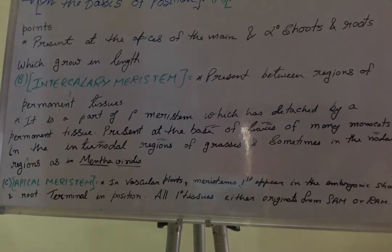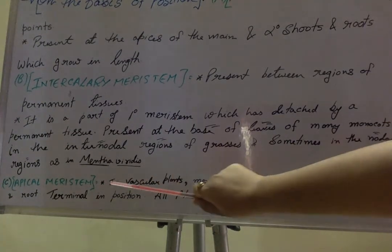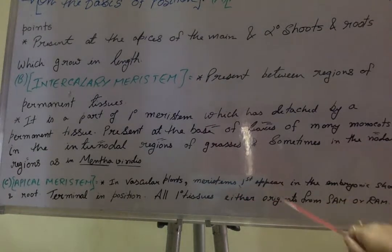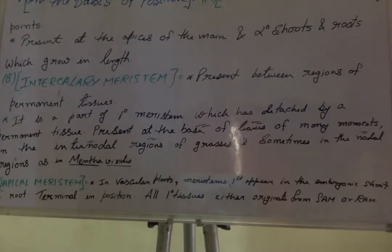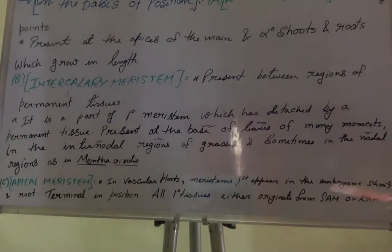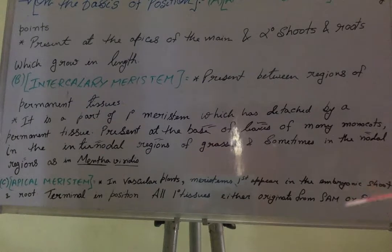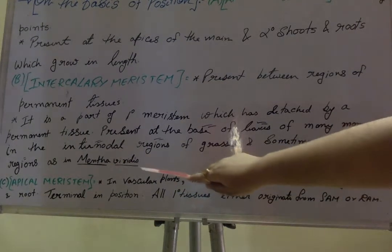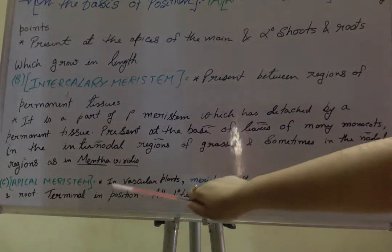The third type of meristematic tissue on the basis of position is apical meristem, found in vascular plants, in which the meristem first appears in the embryonic shoot — that is, the shoot which is developing at its first stage. Apical meristem first appears in the embryonic shoot as well as in the embryonic root, found in the terminal position.